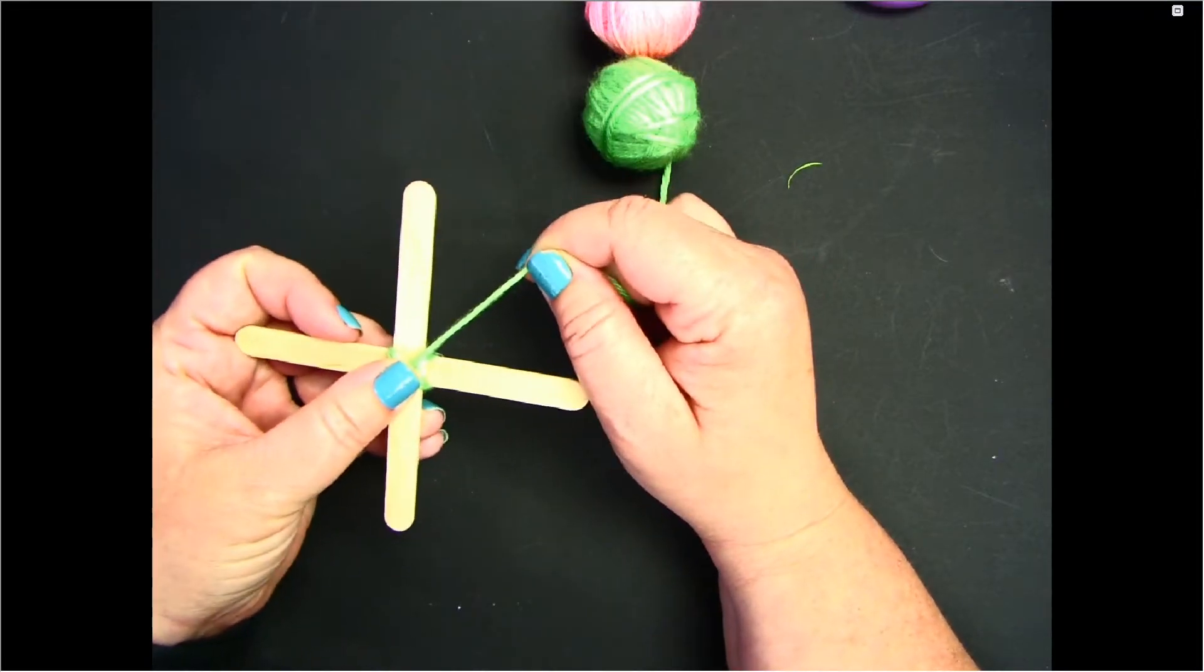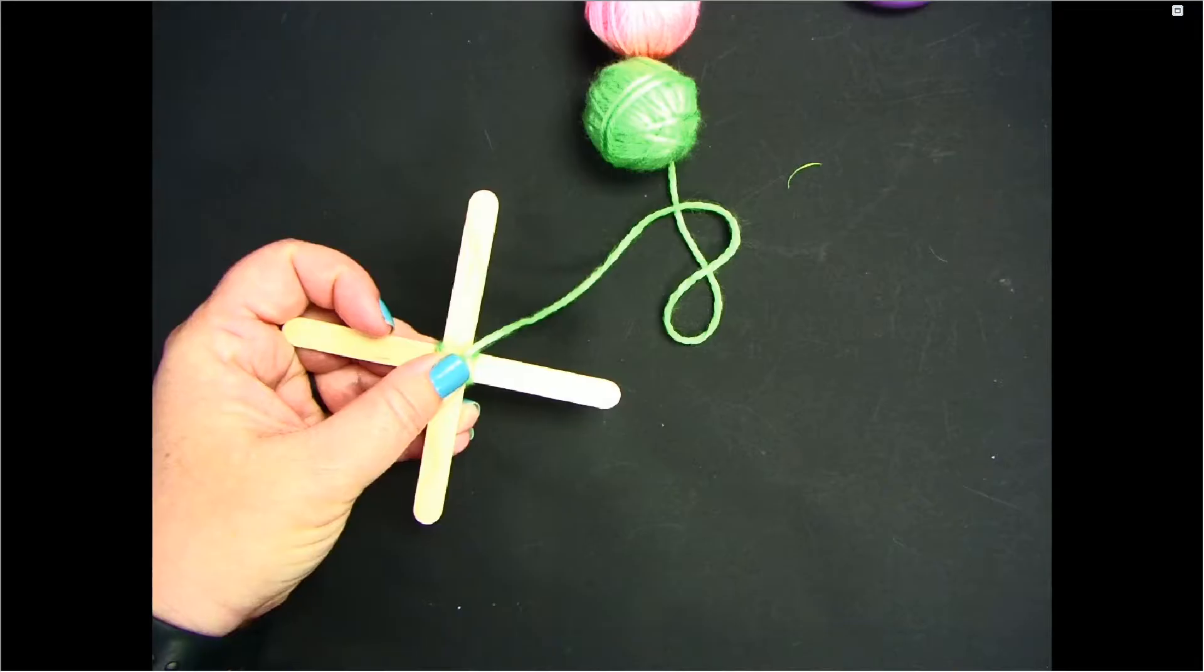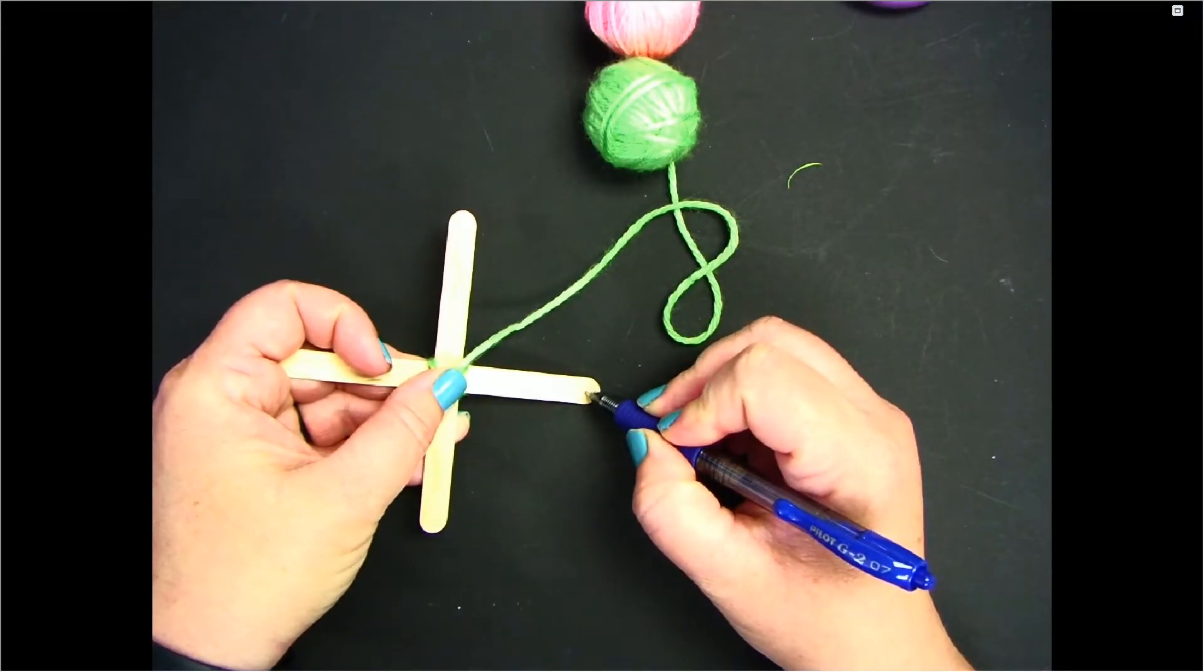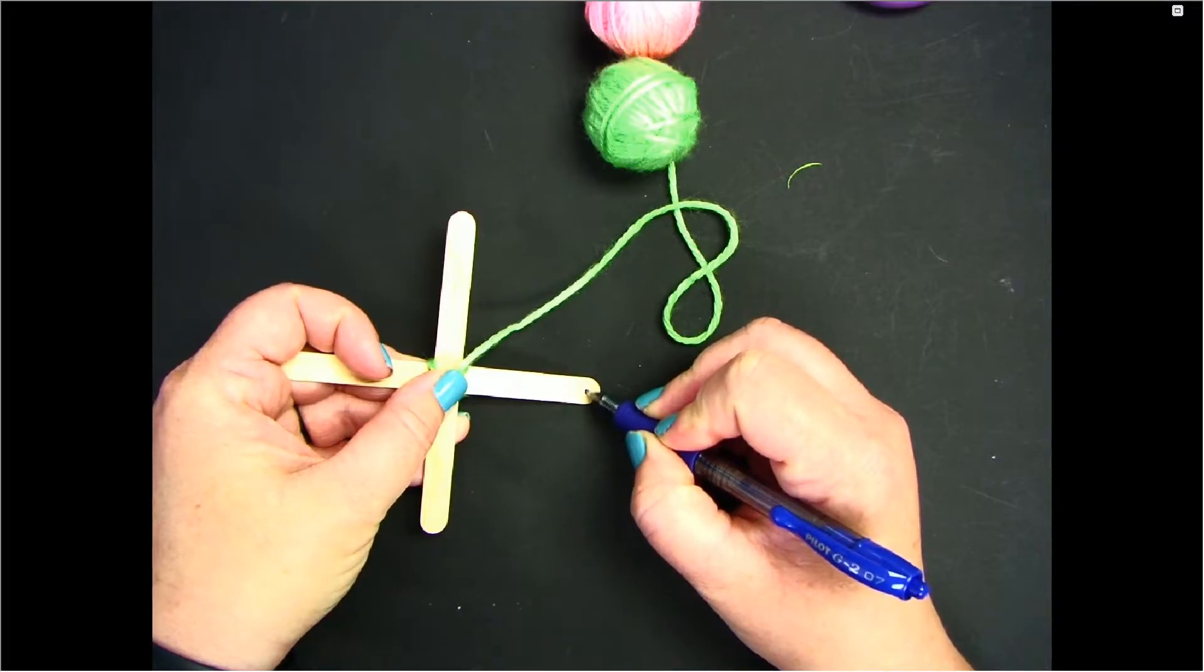This will hold the end of the yarn in place so I do not have to tie it. Next, I'm going to use a pen to mark one side of the popsicle with a dot. This will help me keep track of the back side of my project.